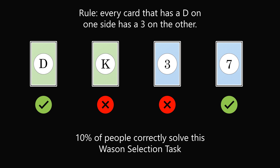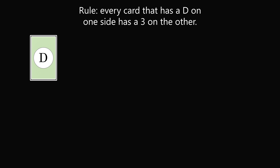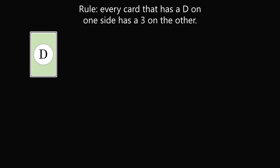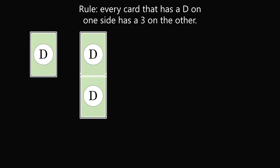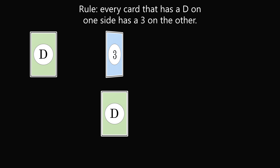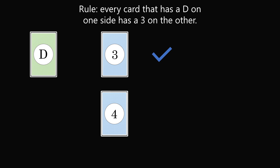To answer why it's so difficult, let's go over why you need to check only D and 7. Starting with D: the rule states that every card that has a D on one side has a 3 on the other. This translates into the logical statement: if D, then 3. So we need to check that a card with D does have a 3 on the other side. If it does, the rule is being followed; if it has some other number, the rule is not being followed. We definitely need to check the D card.